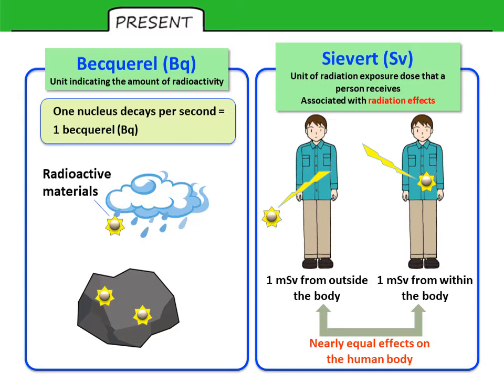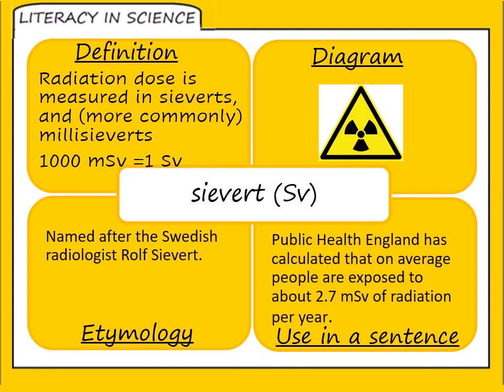Some definitions: the becquerel is a measure of decay — we came across becquerels when looking at half-life. The sievert is the unit of radioactive dose. We tend to measure in millisieverts (mSv) rather than sieverts, because one sievert is actually an incredibly large amount of radiation. We also talk about microsieverts — a microsievert being a millionth of a sievert.